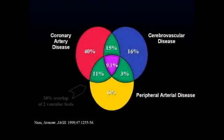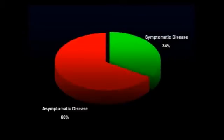There's a significant overlap of atherosclerotic disease, and in fact, patients with this process, approximately 38 percent will have overlap in two vascular beds, either coronary artery disease and/or cerebrovascular disease and/or peripheral arterial disease. Most patients with this disease are asymptomatic — approximately two-thirds or 66 percent will have no obvious symptoms of PAD. In approximately 34 percent, the disease will be symptomatic.